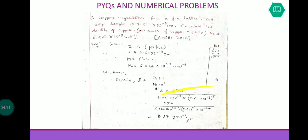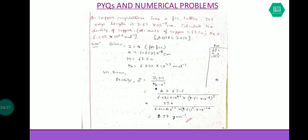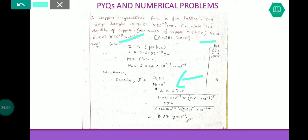You will get a PDF of all these handwritten notes — I will give you the link to download in the description below. The question is: copper crystallizes in an FCC lattice, its edge length is 3.61×10⁻⁸ cm. Calculate the density of copper; atomic mass is given. The formula is ρ = zm/(Na³).